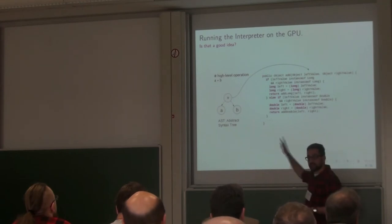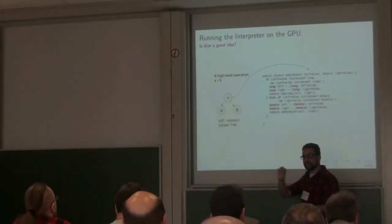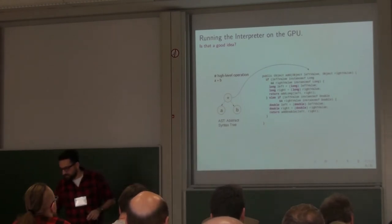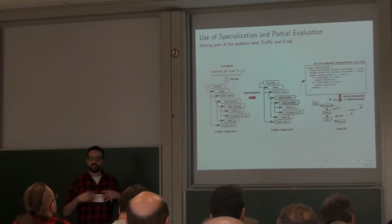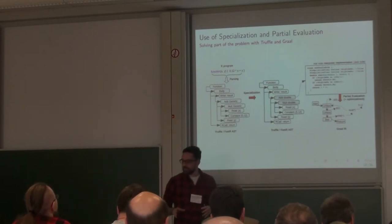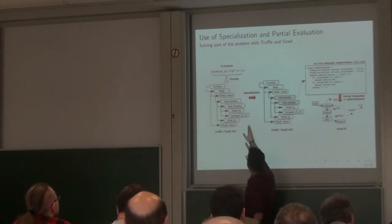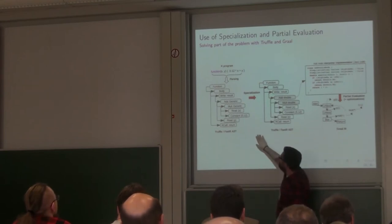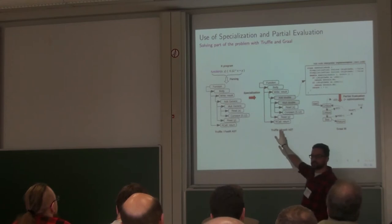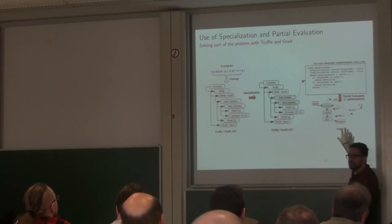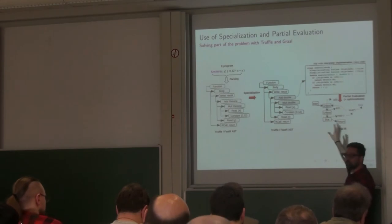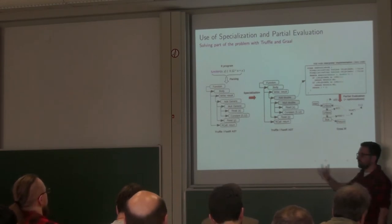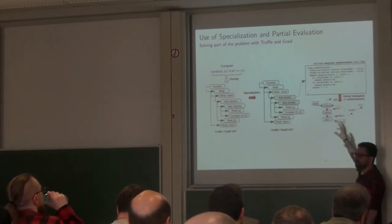Ideally, we want to remove part of this overhead and compile exactly what we want. I use Truffle and Graal. Using type specialization, we get the concrete data type. And by using partial evaluation, we actually compile something very close to what we want. Still, we have some overhead, as I will show you later — partial evaluation doesn't remove all overhead.